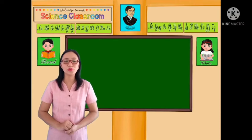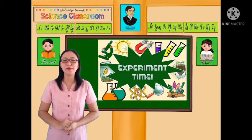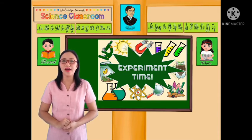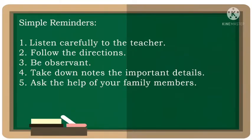We are now at questions number 2, 3, and 4. Let us have an experiment! Because of the pandemic, it is not safe to go out, so let us do our activity inside the house. We are going to improvise. Before we start, here are some simple reminders: 1. Listen carefully to the teacher. 2. Follow the directions. 3. Be observant. 4. Take down notes of the important details. 5. Ask the help of your family members.